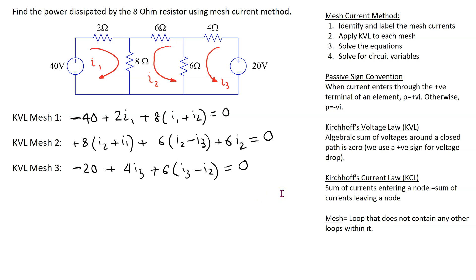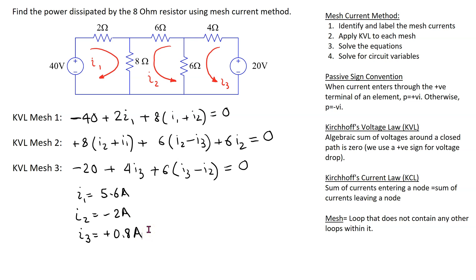Solving these equations, I1 = 5.6 amps, I2 = -2 amps, and I3 = +0.8 amps. Comparing to the previous solution, the signs of I2 and I3 are different because we assumed different directions, but when solving for circuit variables such as voltage and power, we get the exact same values. This concludes this detailed example illustrating the application of the mesh current method to solve circuits.